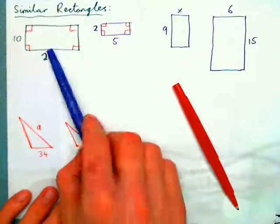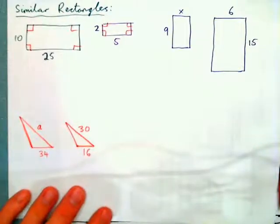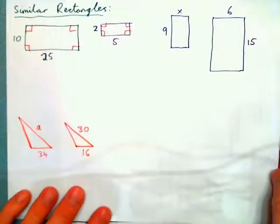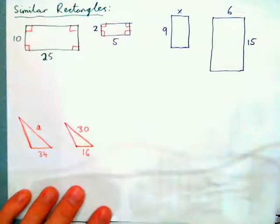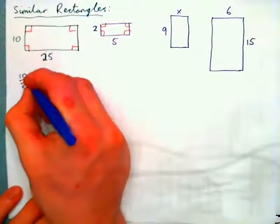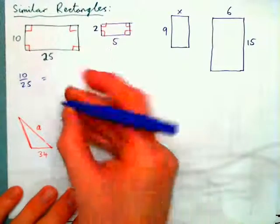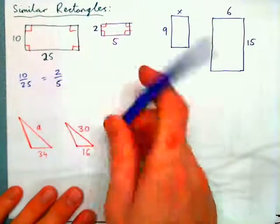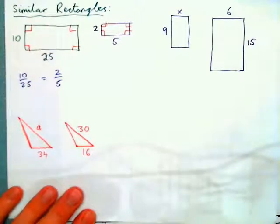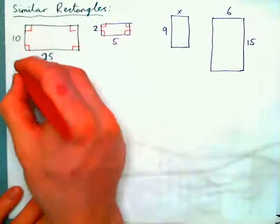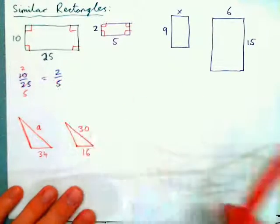If this rectangle is similar to this rectangle — and by the way, not all rectangles are similar, but these two are — because 10 over 25, this length over this length, is equal to 2 over 5, this length over this length. When we simplify: 5 into 10 goes twice, 5 into 25 goes 5 times, so we have 2 fifths equals 2 fifths. So they are similar rectangles.